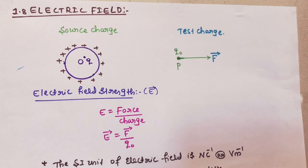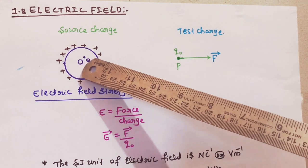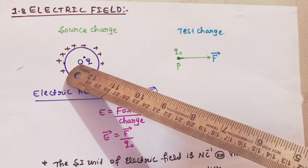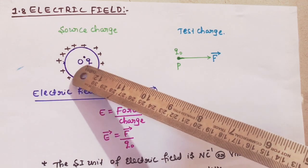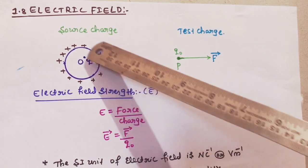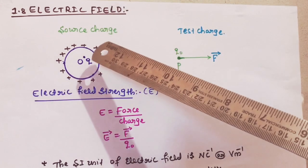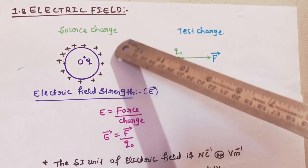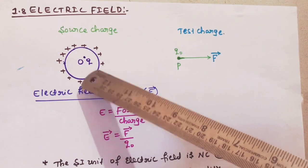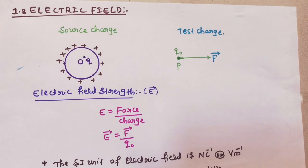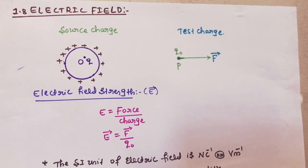Electric field — consider a charged body carrying a positive charge Q placed at point O. It is assumed that the charge produces an electrical environment in the surrounding space, which is called the electric field. The electric field is defined as the space around a charge in which its presence is experienced.